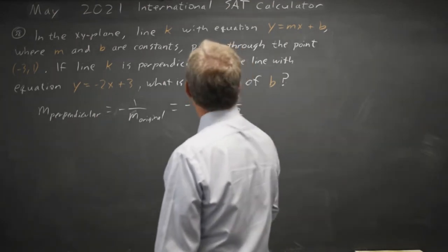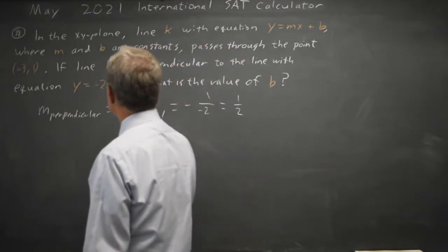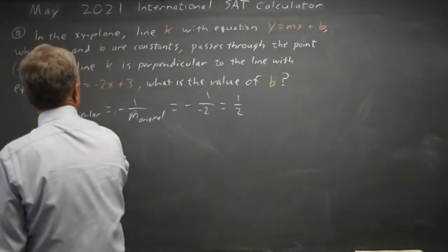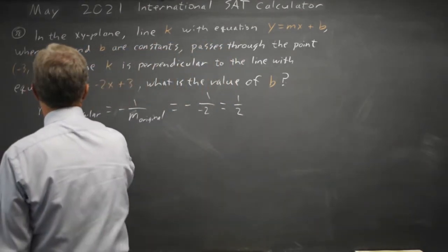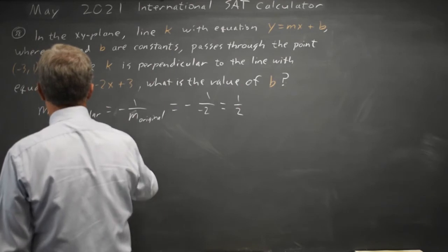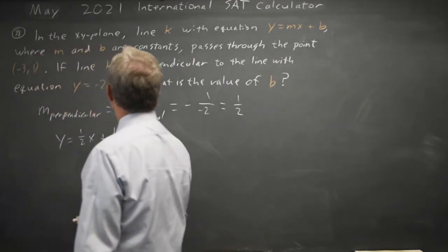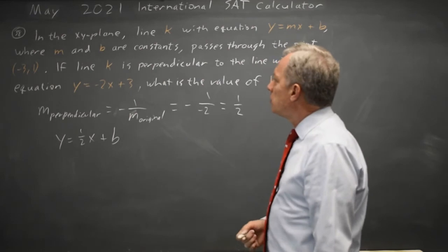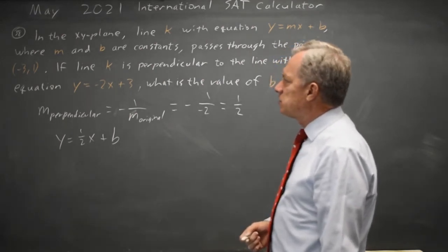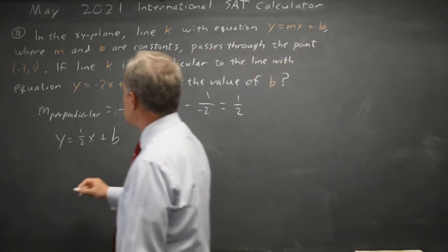In the equation y equals mx plus b, m is the perpendicular slope 1 half, so y equals 1 half x plus b, and we're supposed to solve for b. We know that when x equals negative 3, y equals 1.